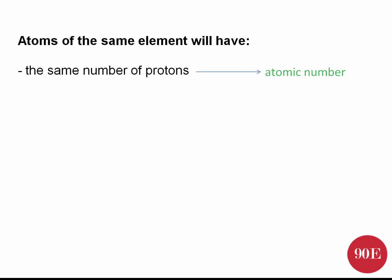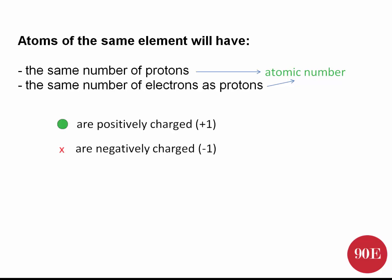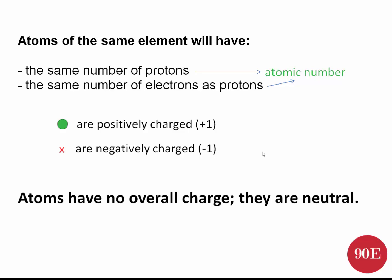Atoms will also have the same number of electrons as protons. So if we look at the atomic number, we'll be able to work out how many electrons there are in an atom as well. Protons are positively charged subatomic particles and electrons are negatively charged subatomic particles. If you've got the exact same number of opposite charges, then you're going to have a neutral charge. That's always the case with atoms — they have no overall charge; they are neutral.